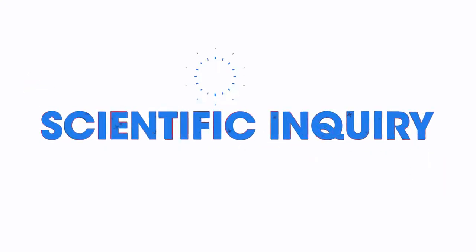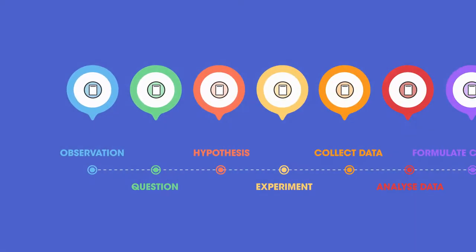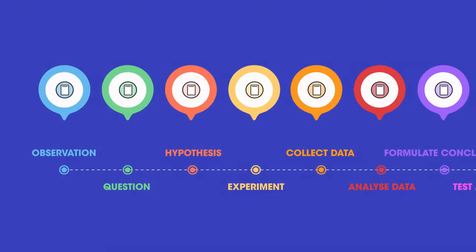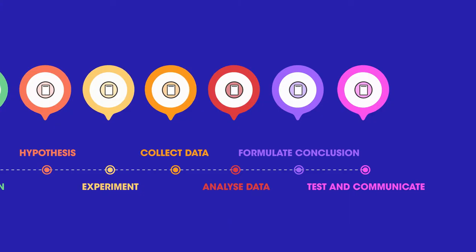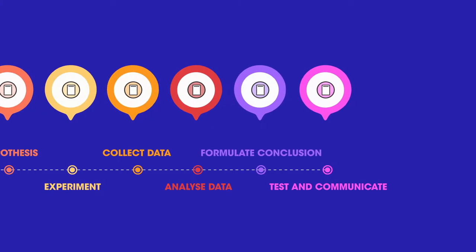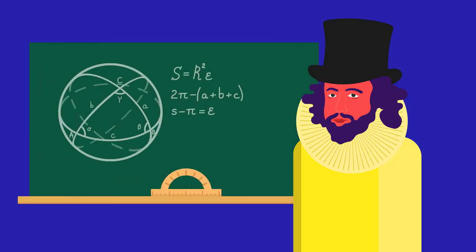How is scientific inquiry carried out in practice? Before a hypothesis is accepted by the scientific community, it goes through a series of steps. This is what we call the scientific method. This method was first devised by Sir Francis Bacon, an English scientist and philosopher. He argued that evidence was needed in order to prove that something was true.